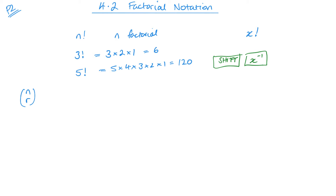So n works like this: when we've got our brackets raised to a power, that power is going to be our value of n. So if it's to the power of 5, n is 5; raised to the power of 3, n is 3, and so on. And then r will be the position within that expansion. When r is 0, that's the first term; r is 1 is the second term; r is 2 is the third term, and so on.